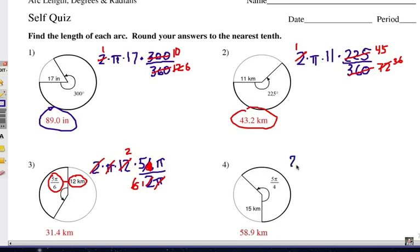Circumference is 2 times pi times the radius of 15. Multiply by the central angle, which is 5 pi over 4. Now, I'm going to go ahead and just also put the 2 pi down there. Remember, we're dividing by the entire rotation of the circle, which is 2 pi.